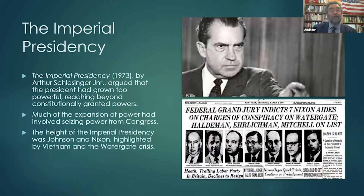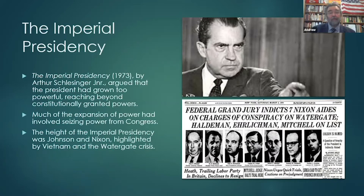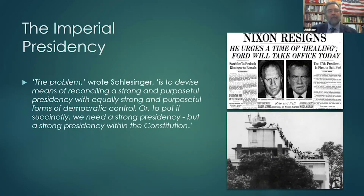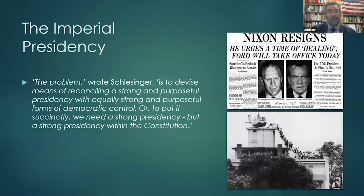After Neustadt's theory, which pushed this idea of the power of persuasion, we jump forward to another theory put forward at the beginning of the 1970s. This was a notion put forward by a man called Arthur Schlesinger, and it was the notion of the imperial presidency. Schlesinger said the problem is to devise means of reconciling a strong and purposeful presidency with equally strong and purposeful forms of democratic control — or to put it succinctly, we need a strong presidency but a strong presidency within the constitution.